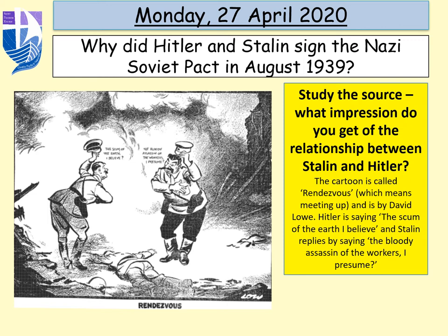One of the interesting things that happened — and to give you the context of this — in August 1939, Germany and the Soviet Union signed a pact. A pact means an agreement. They signed this agreement where they basically pledged not to go to war with each other, and they also divided up Poland between them. We'll look at some of the geography of this later on in the lesson.